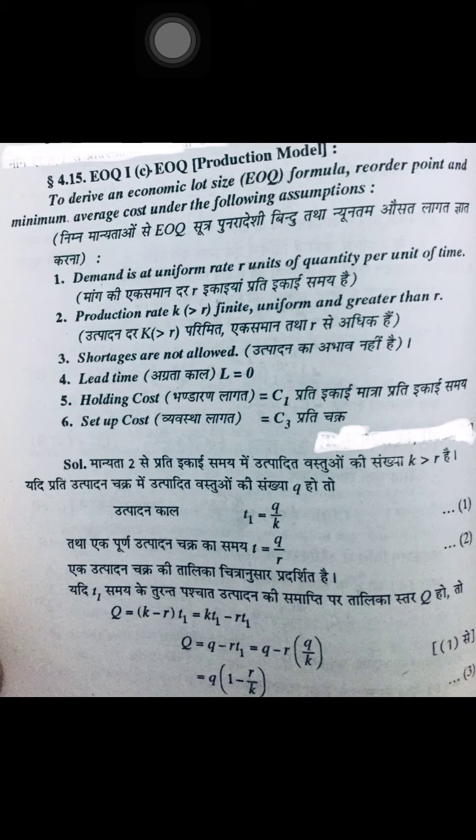An important change in this model from the first two models: shortage is not allowed — shortage cost C2 will always be 0. Lead time will also be 0, because since there is no shortage, the moment an order is placed the goods are received, so the time between them becomes 0. Holding cost is denoted by C1, setup cost by C3, and shortage cost C2 is 0.